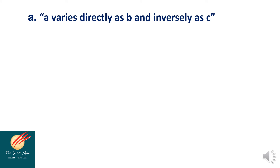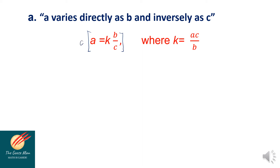To illustrate combined variation: A varies directly as B and inversely as C. In symbol, A is equal to K times B all over C. To solve for K, multiply both sides by C to get AC is equal to KB, then divide both sides by B, so K is equal to A times C all over B. K is our constant of variation.